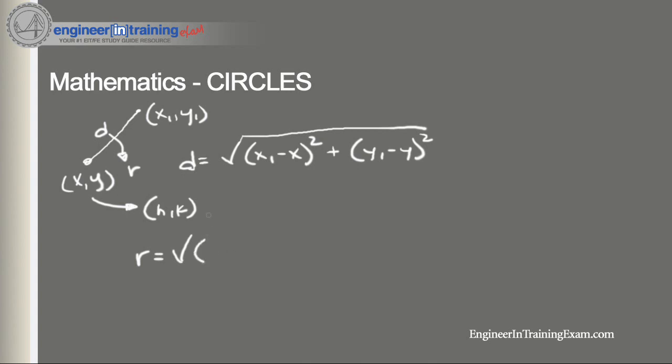So by doing that we get r squared equals, let's get rid of the x1 and y1, let's just call them (x,y) representing any point (x,y) on the outside of a circle.